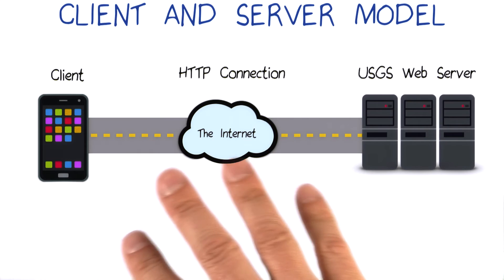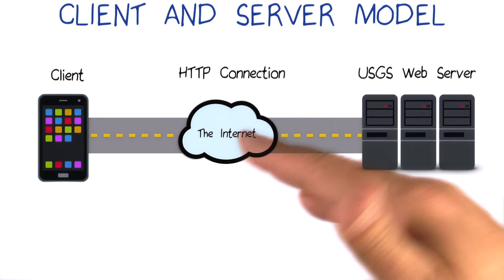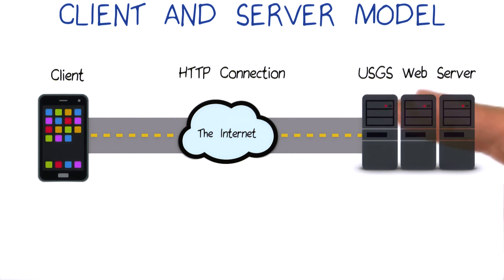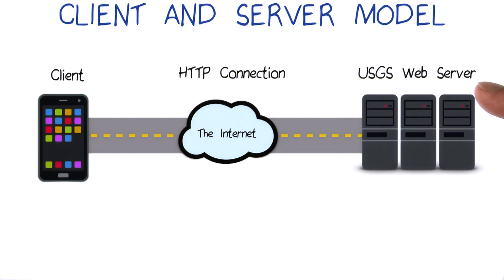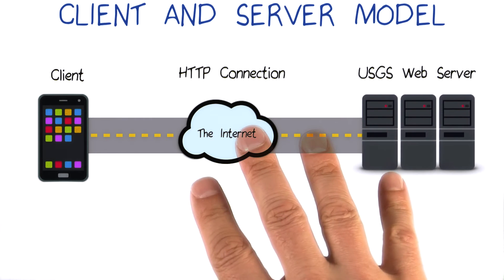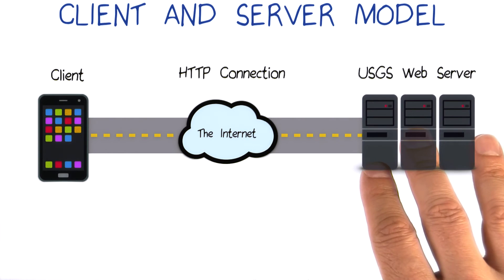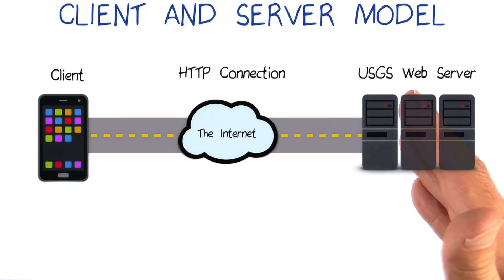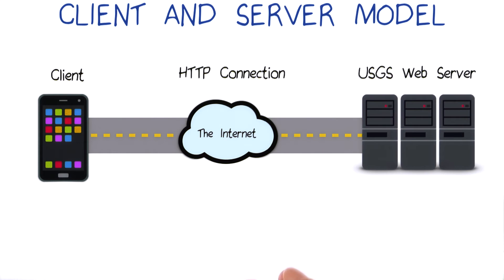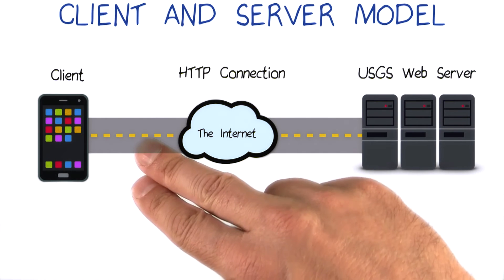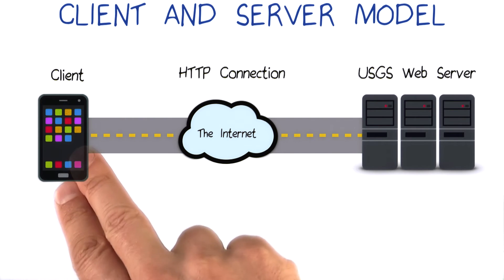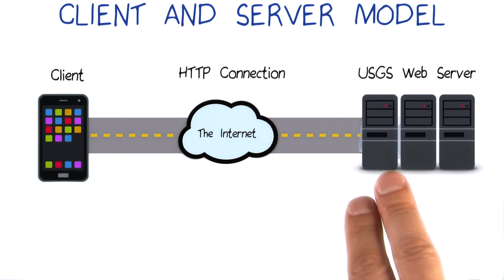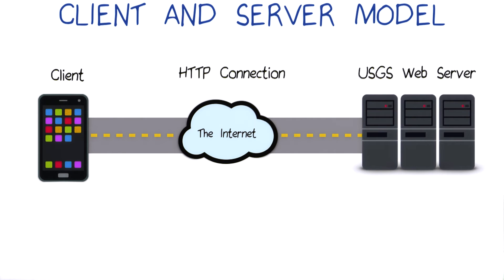At this point, I want to introduce you to some more formal terminology that you'll often hear. You can refer to the USGS computers that are providing data as the USGS web server. A web server is simply another computer or a group of computers on a network running a program that responds to HTTP requests. On the other hand, your phone can be referred to as the client.